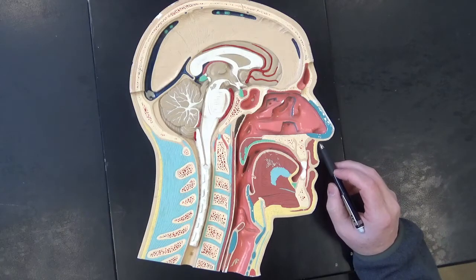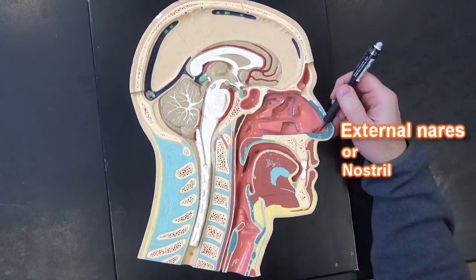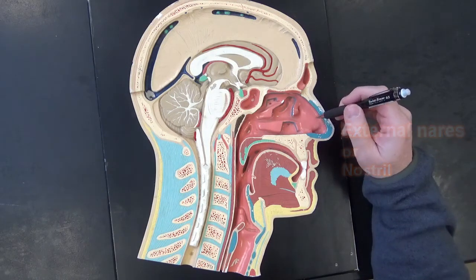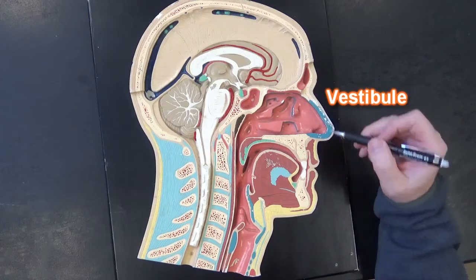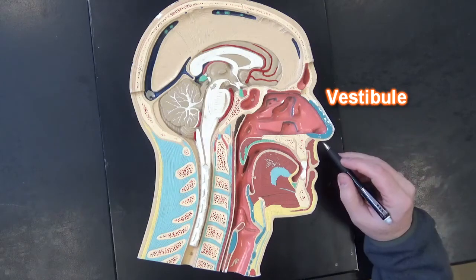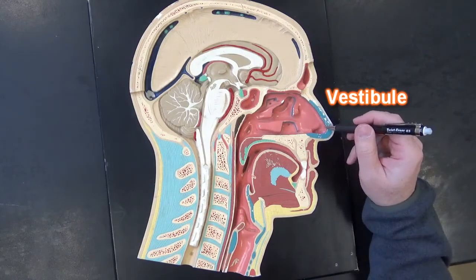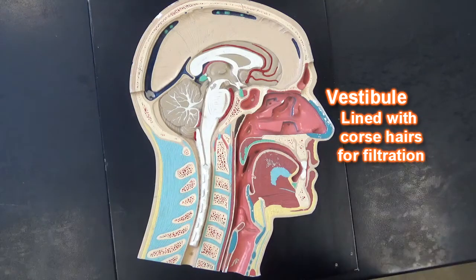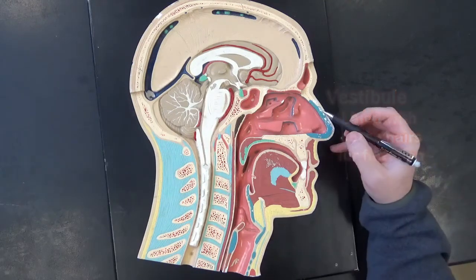This is the external nares, or nostril, that will bring the air into the vestibule when we breathe. The vestibule is going to be lined with hairs. Those hairs will help to filter out large particles when we breathe air in.